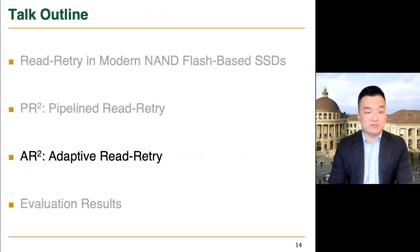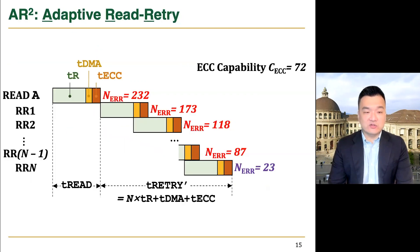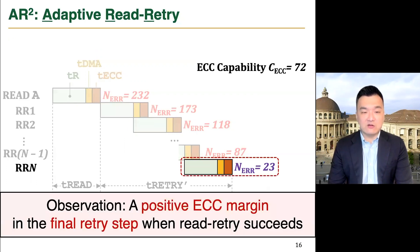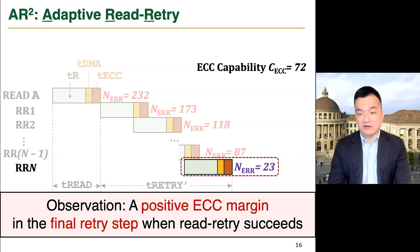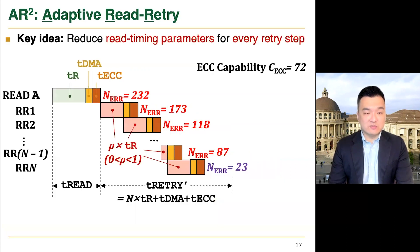Next, let me present our adaptive read retry. This figure shows our pipeline read retry mechanism, and we observe that there always exists a positive ECC margin in the final retry step when read retry succeeds. For example, we can see a large ECC margin since there are only 23 bit errors in the final retry step, while the ECC can correct 72 bit errors. ARS exploits this ECC margin to reduce the read timing parameters for every retry step, which further reduces the read retry latency.